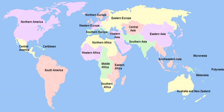The creators note that the assignment of countries or areas to specific groupings is for statistical convenience and does not imply any assumption regarding political or other affiliation of countries or territories. The UNSD Geoscheme does not set a standard for the entire United Nations system, and it often differs from geographic definitions used by the autonomous United Nations specialized agencies for their own organizational convenience.